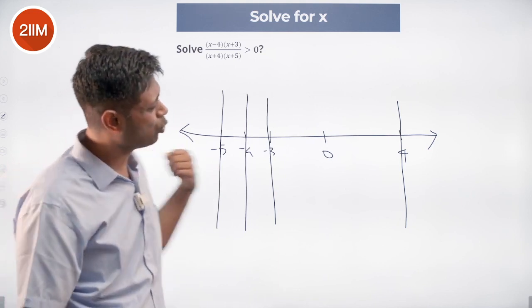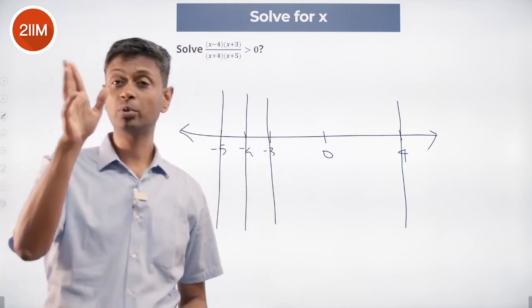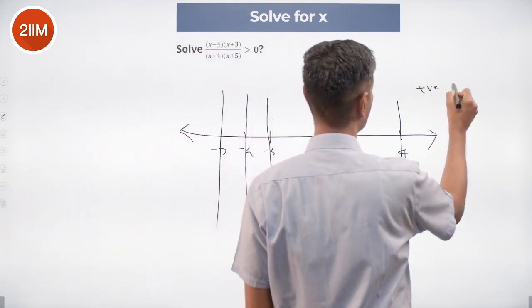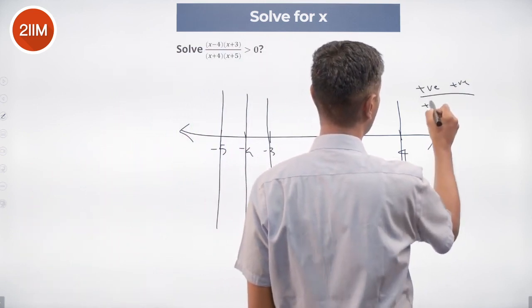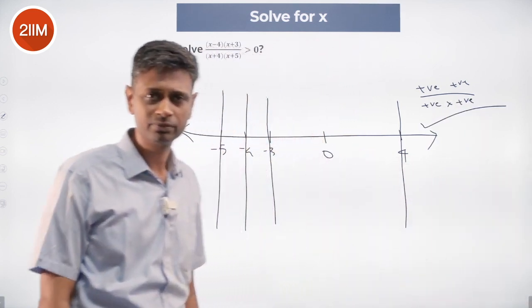We look at numbers more than 4. Positive, positive, positive, positive. Positive into positive, positive into positive. Brilliant. Positive, positive, positive into positive. This works. Nice.